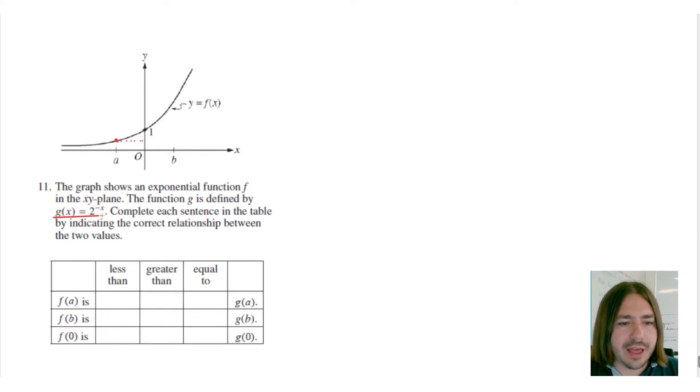Now if I plug in a into g of x here, then we have g of a is equal to 2 to the power of negative a. And at this point, you might be a little confused. Like, how does that help me at all determine the value? Well, a is still the same a over here. So what's interesting about this is notice that a is over here on the negative side of the x-axis.